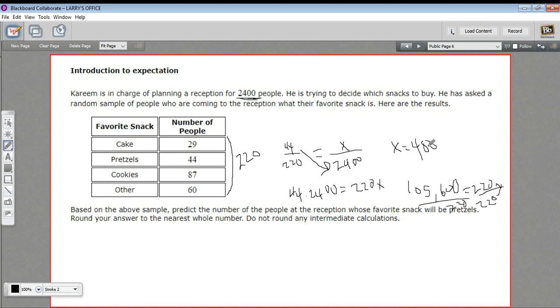So that is a good way to get an idea. You take a sample of people, you take that data, you apply it to the larger amount, and you can predict how many pretzels to buy.